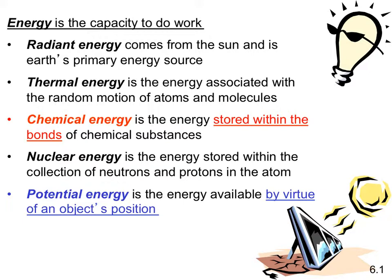Energy is the capacity of something to do work, and there are different types. Radiant energy comes from the sun — it's the Earth's primary source of energy. It helps plants grow, and we're able to harness it with solar cells and things of that sort.